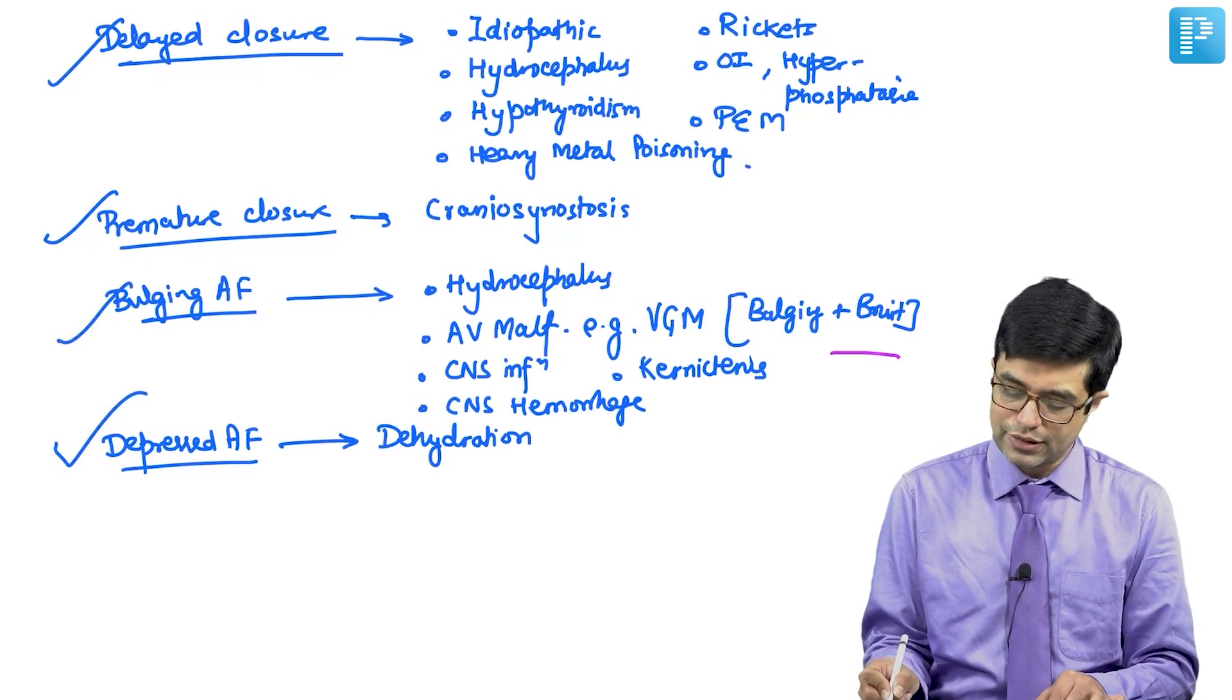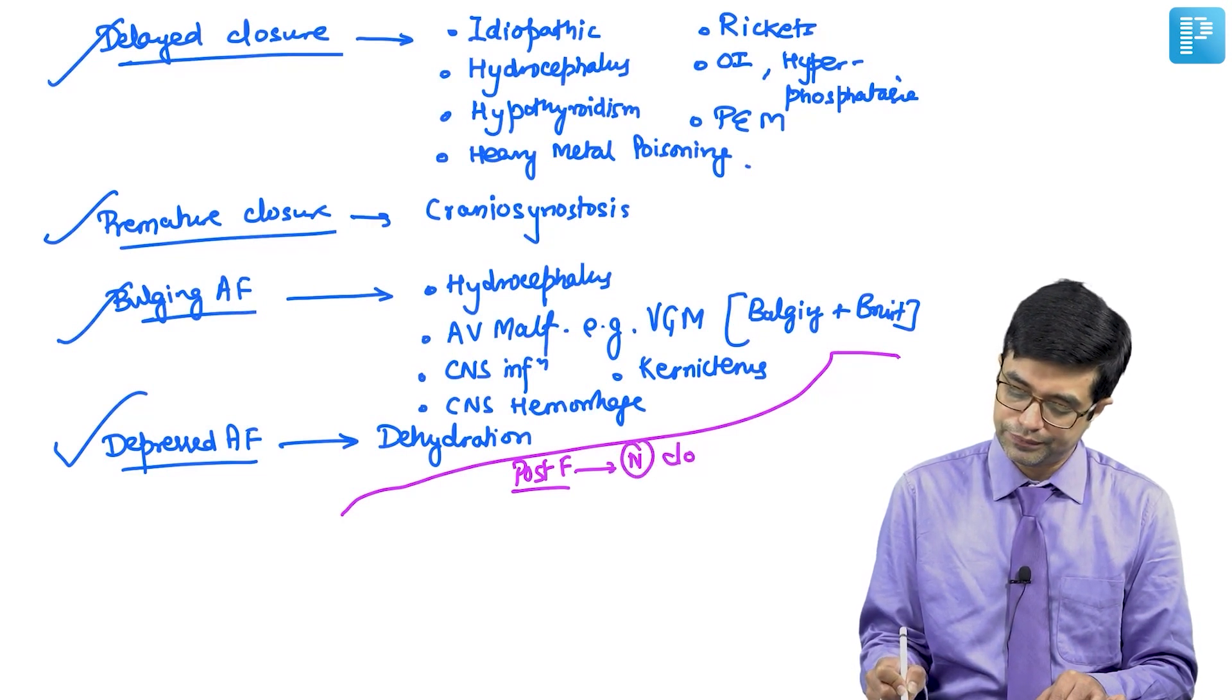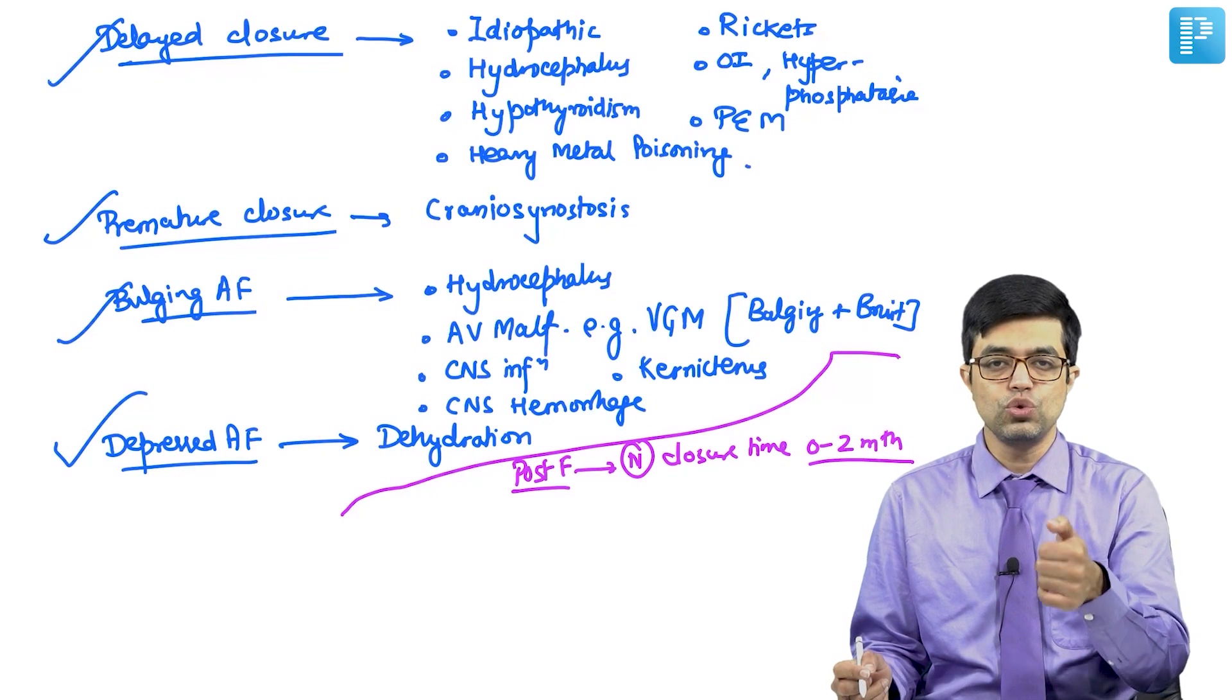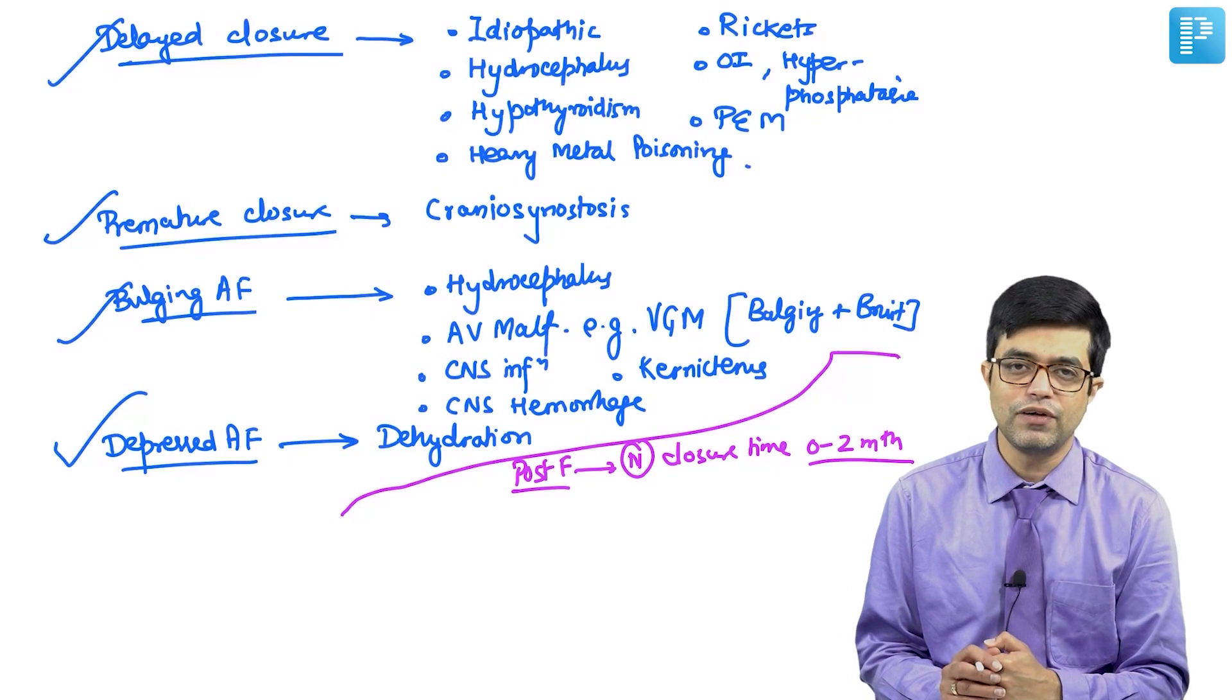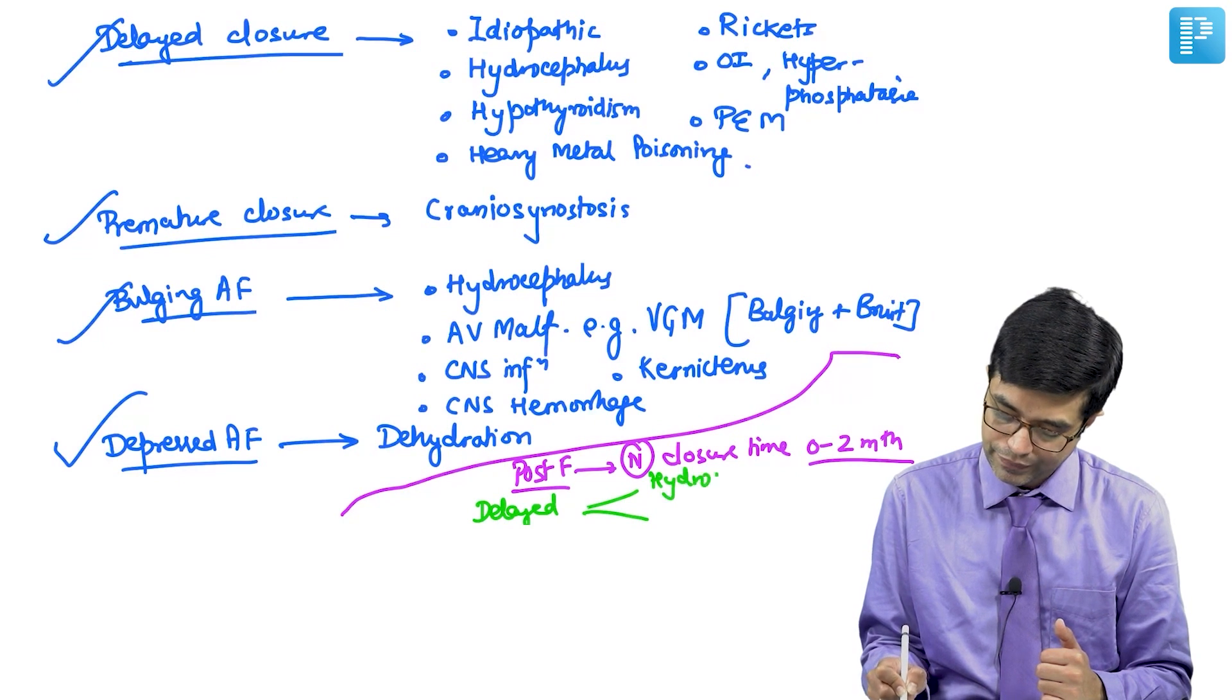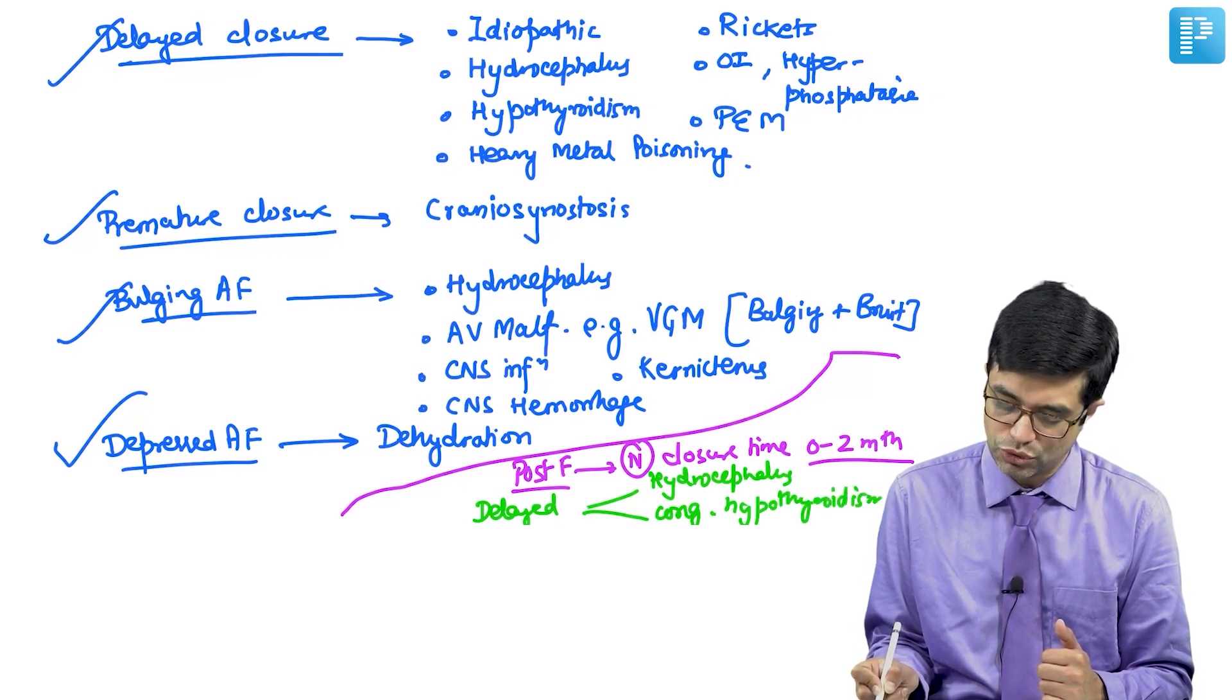Although not frequently asked, you can remember that posterior fontanel normal closure time is 0 to 2 months. It is either closed at birth or closes within 2 months that is 8 weeks of birth. Any persistent closure beyond 8 weeks will be considered abnormal. There are two major causes of delayed closure of posterior fontanel: hydrocephalus as well as congenital hypothyroidism.